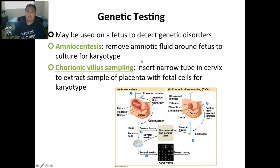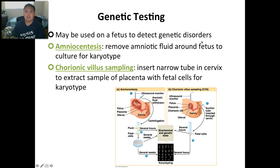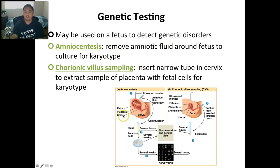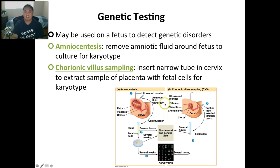One thing you can do to find out about genetics is genetic testing. The main reason is to know if there's going to be a genetic disorder beforehand. The majority of pregnancies now do some sort of genetic testing. There are two ways: amniocentesis, where they remove the amniotic fluid and check the karyotype; and chorionic villus sampling, where they insert a narrow tube in the cervix and extract a sample of the placenta.